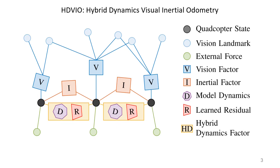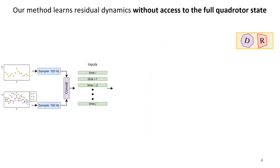We address these limitations by proposing a hybrid dynamics model that combines a first-principles quadrotor model with a learning-based component that captures unmodelled effects, such as aerodynamic drag. In contrast to prior work, our learned dynamics do not require knowledge of the full drone state, but only thrust and gyroscope measurements.